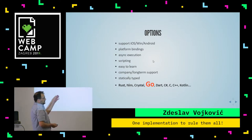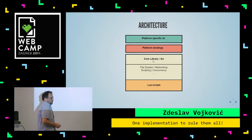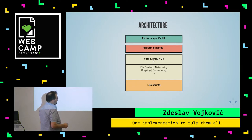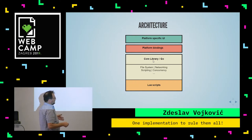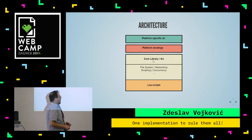Once we chose Go, we quickly settled on Lua for scripting because it's more or less standard for that purpose. This was our new architecture: platform-specific UI and services built on platform technology like Objective-C or Java for Android, and a core library written in Go, which handled file system, networking, scripting, concurrency, communication with payment terminals, communication with our payment gateway and server, and also hosting Lua scripts.